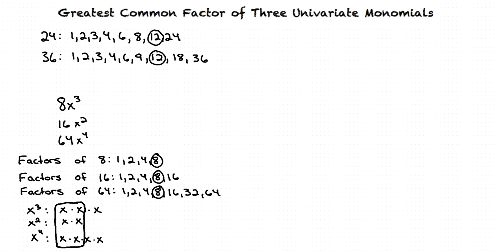Combining these, we see that the Greatest Common Factor of the monomials is 8x squared. But what happens if there are no common factors for the coefficient of each expression?